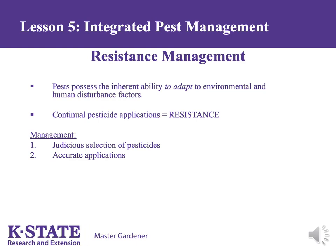Integration with other pest management strategies can result in reduction or elimination of pesticide use. For example, choosing a crab apple variety resistant to cedar apple rust may eliminate the need for ever using a fungicide, or growing a thick healthy lawn may eliminate the need for herbicides.